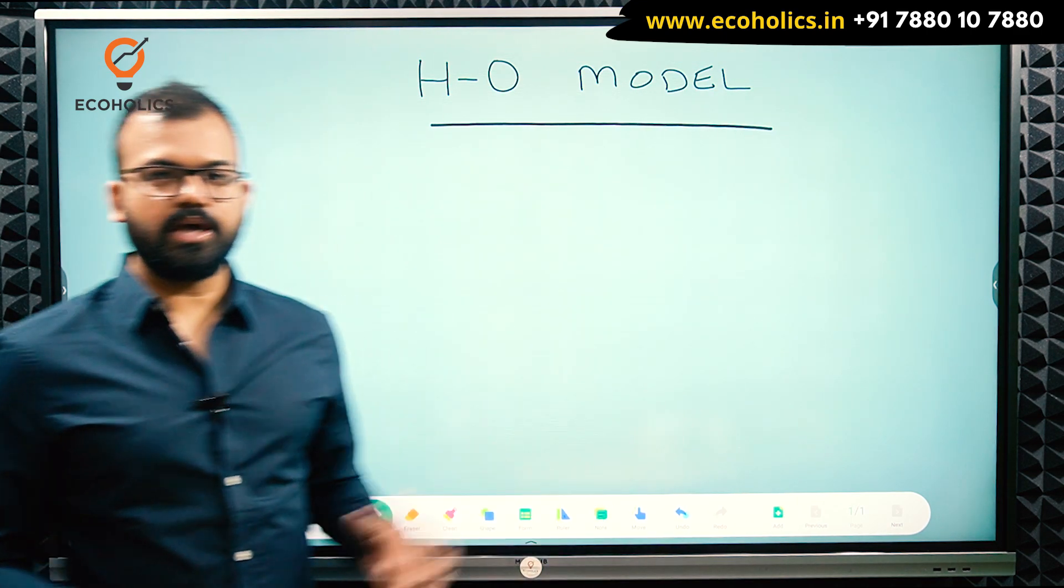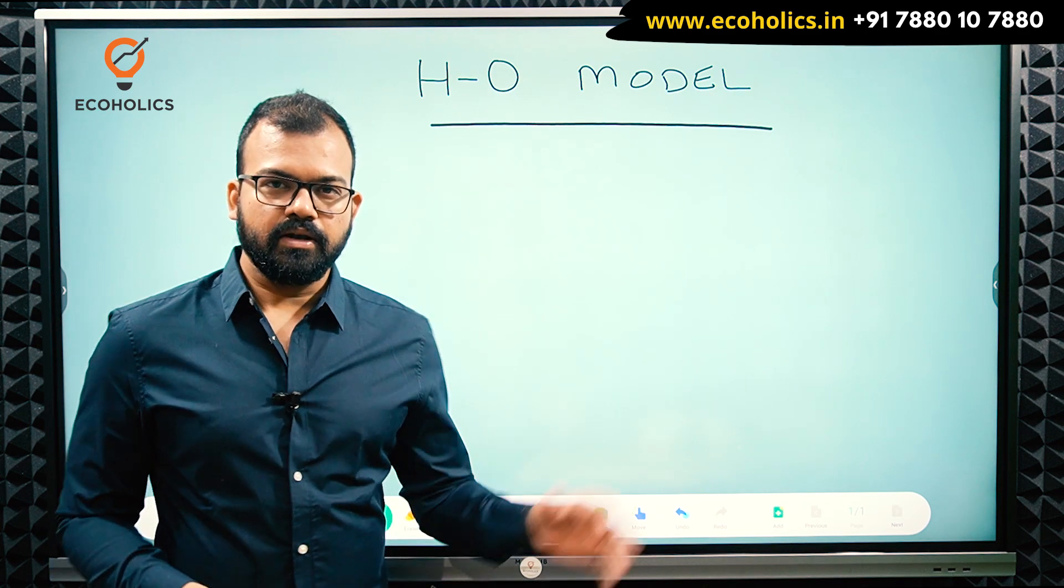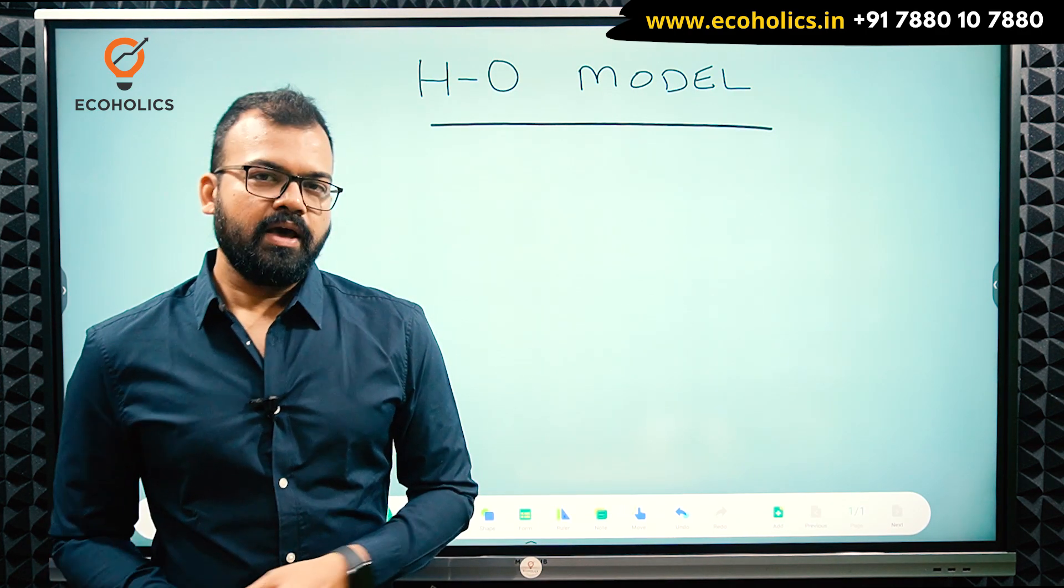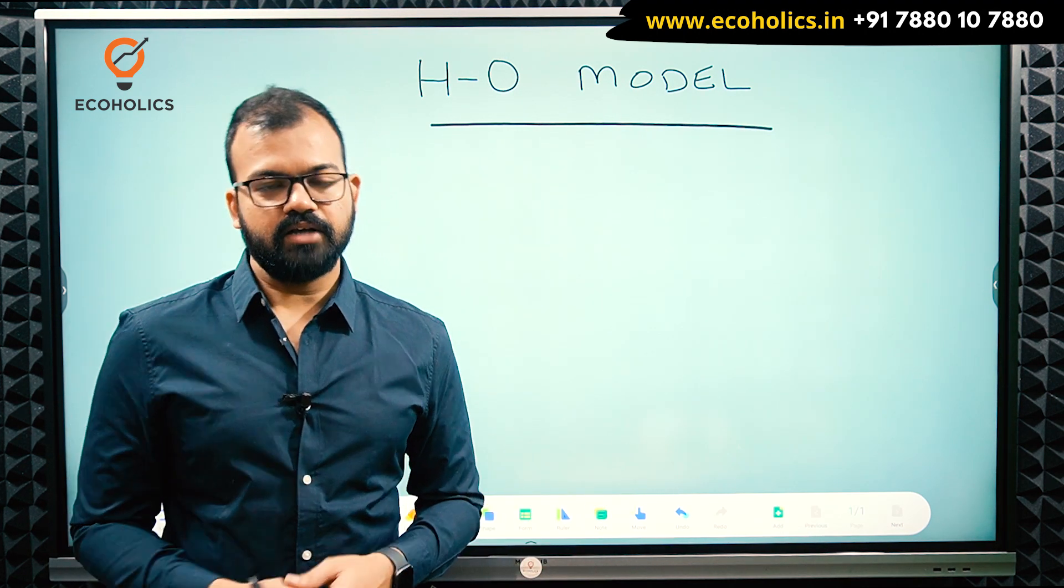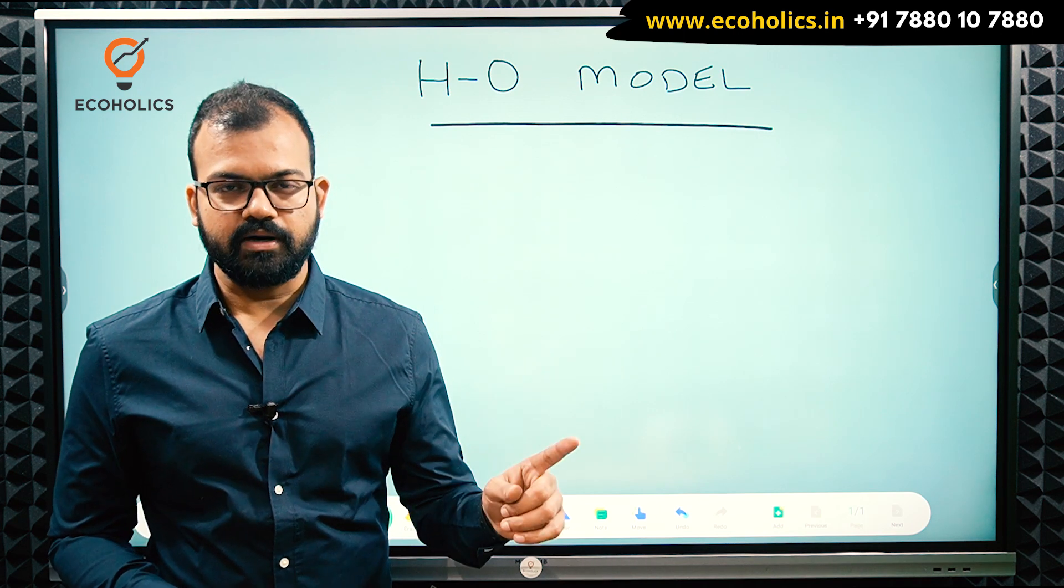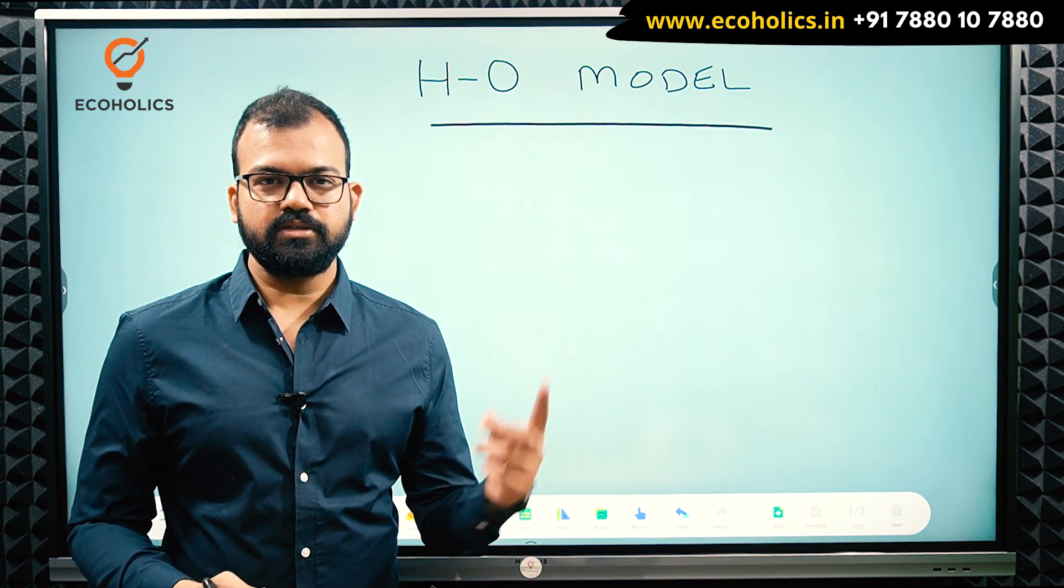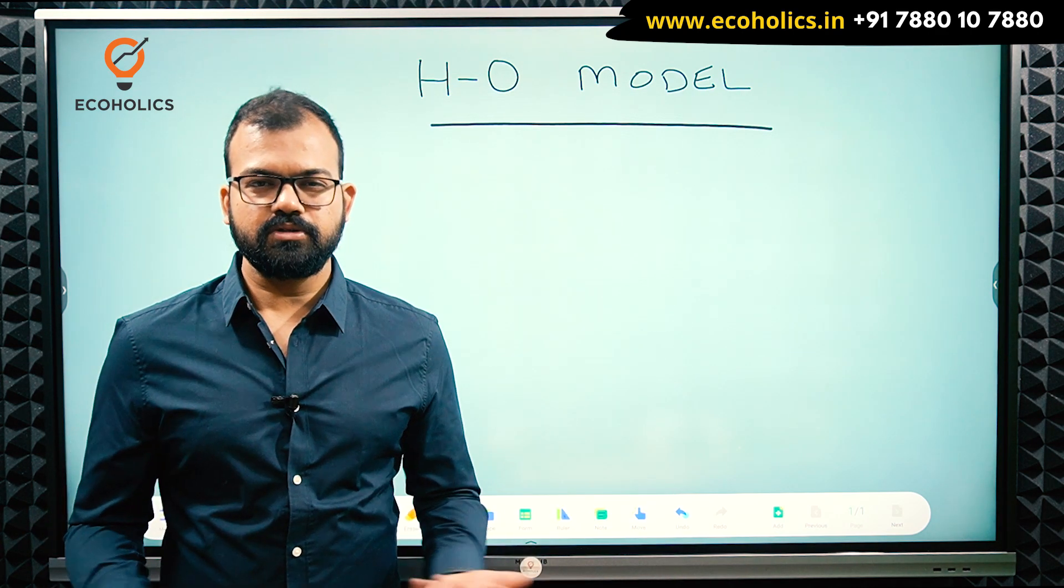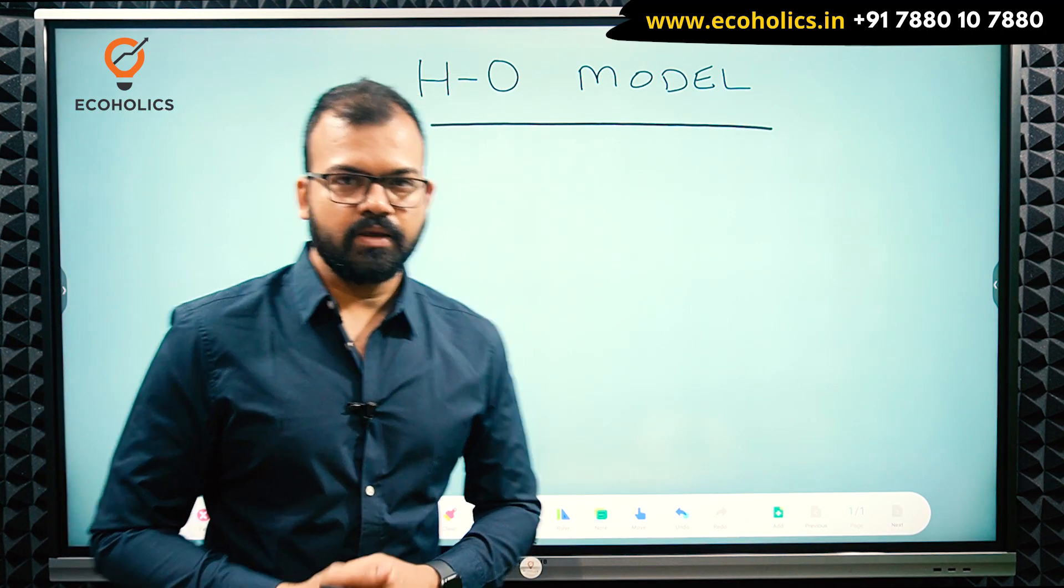So coming to this topic, I have explained the theory earlier. Now we will see the diagram and understand how countries engage in trade. As I told you earlier, there are certain assumptions. For any examination, if you are writing, assumptions are the most important part. There are assumptions like the 2x2x2 model: 2 countries, 2 products, 2 factors of production. You can see this in textbooks, but here we will discuss the diagram very carefully. Let's begin.